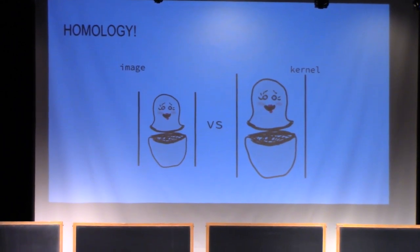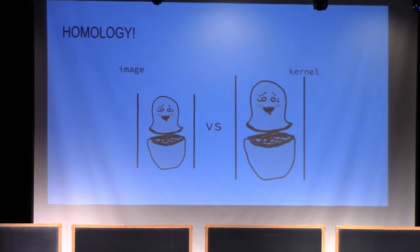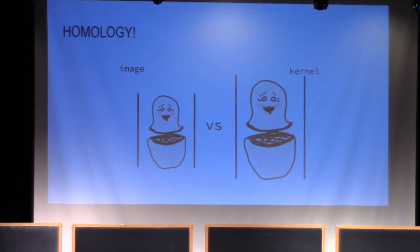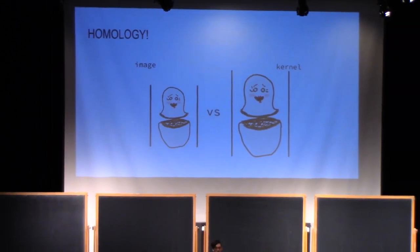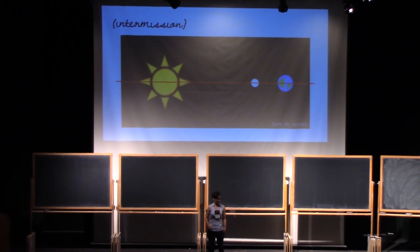A really loose explanation of homology is that when you take the image and the kernel that nests together and compare their sizes, how much bigger the kernel is tells you how holey your object is in some dimension. So that's homology in like two minutes. Congratulations, you're experts.